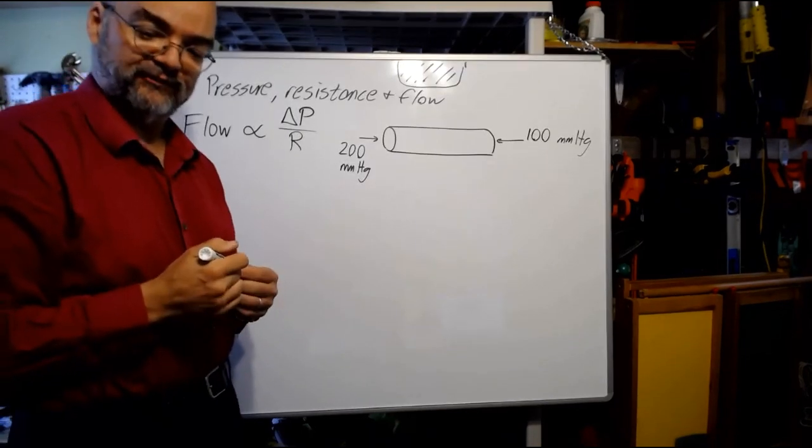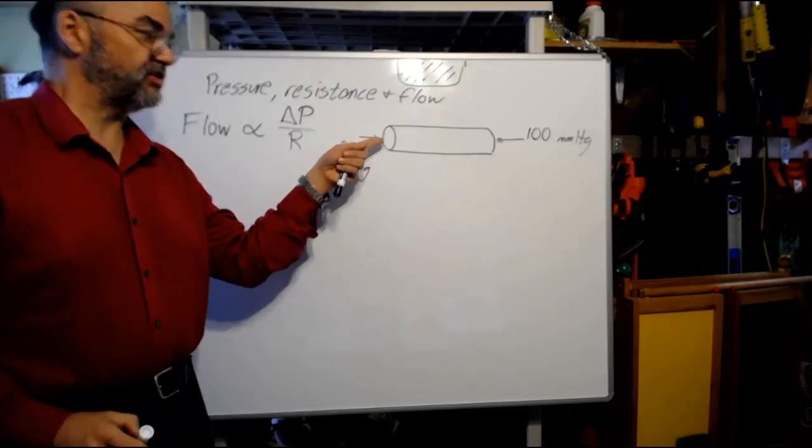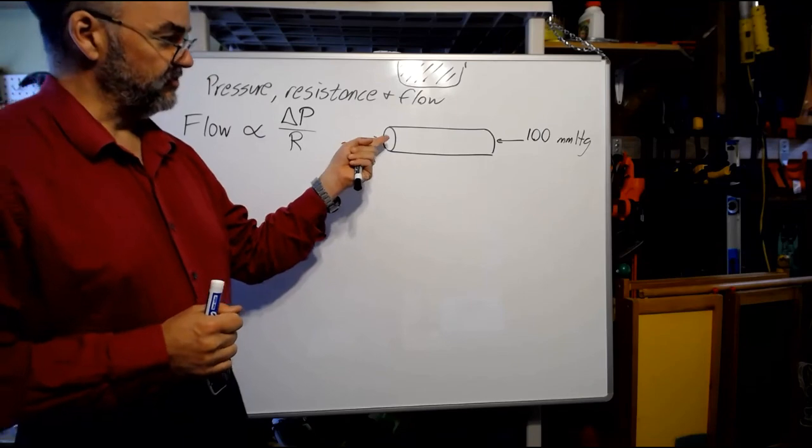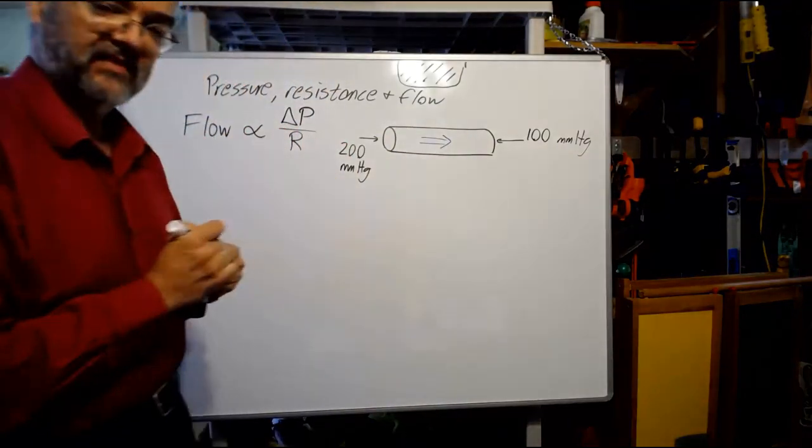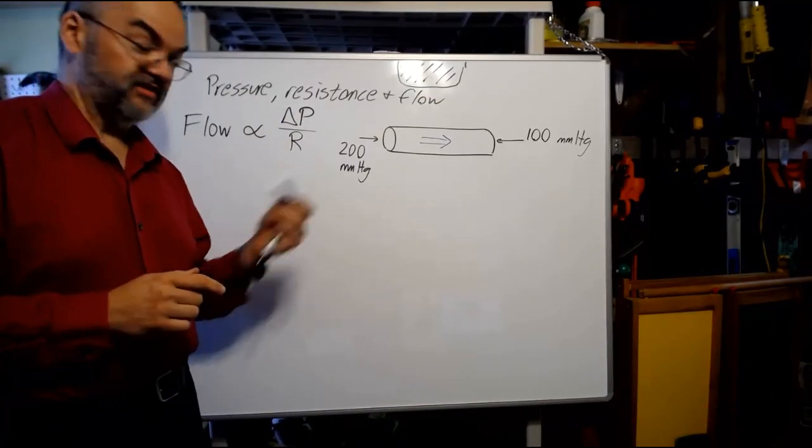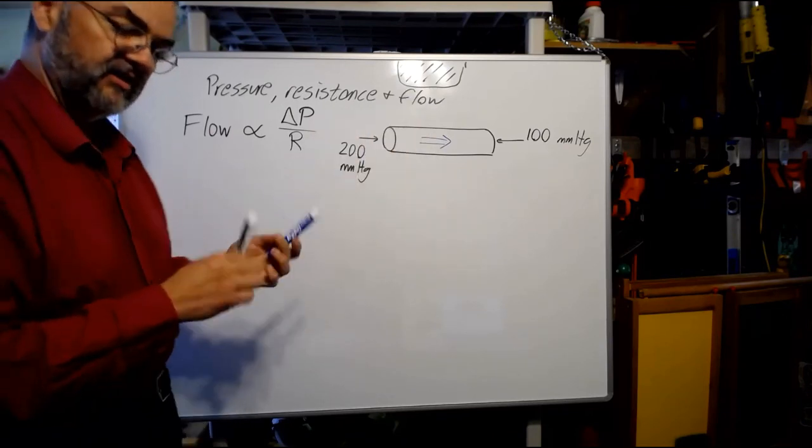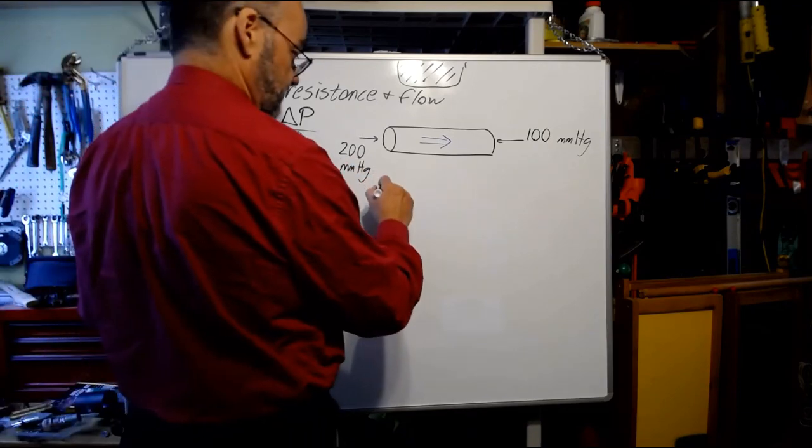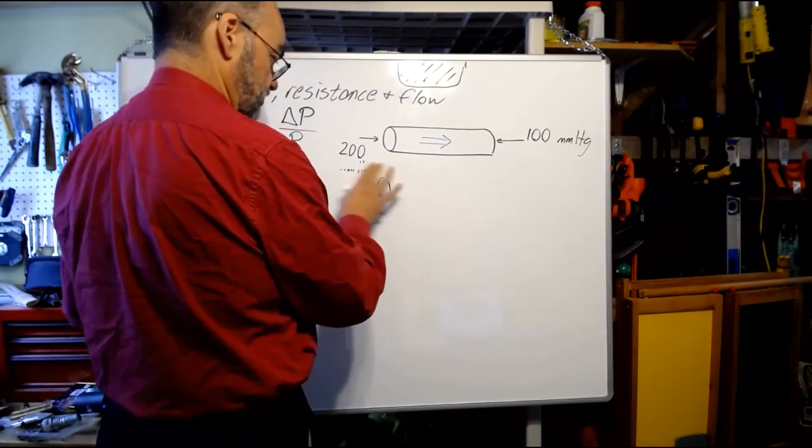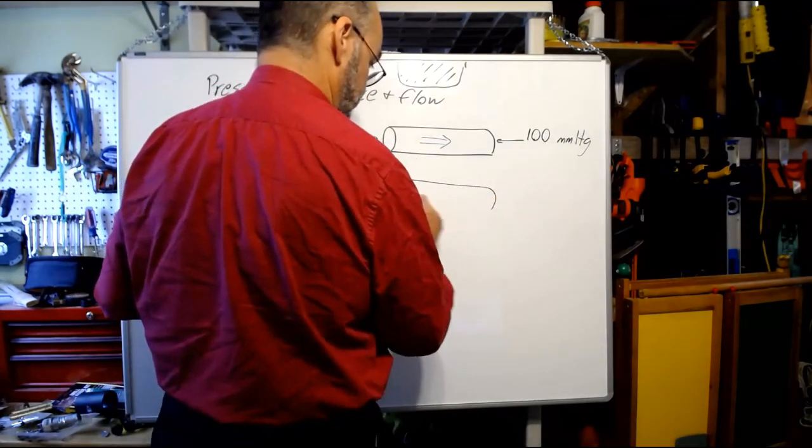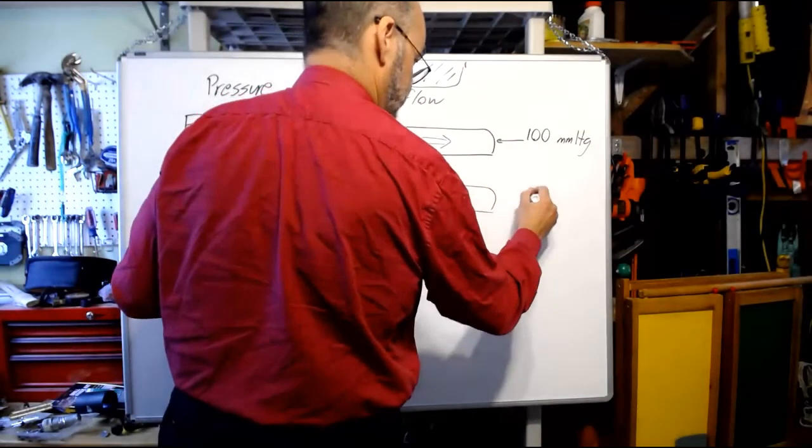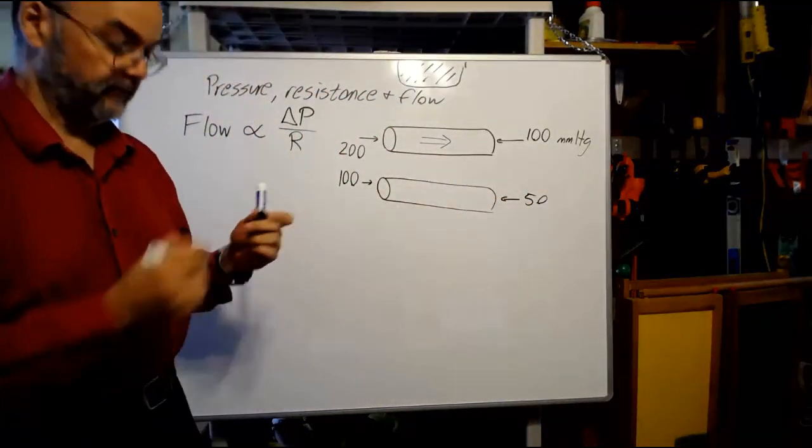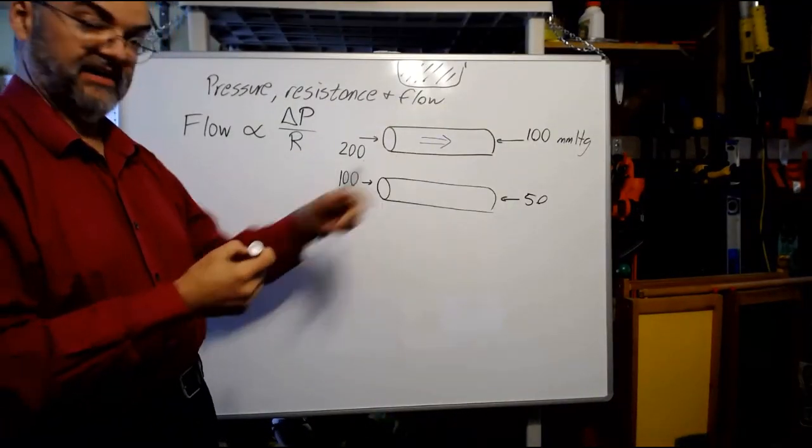Now, which way is the fluid going to flow in this case? If I'm applying more pressure on this side than on this side, which way do you think it'll go? Fluids move from where there's high pressure to where there's low pressure. So, in this case, flow will be in this direction. Now, the difference in pressure, delta p here, is going to be the difference from one side to the other.